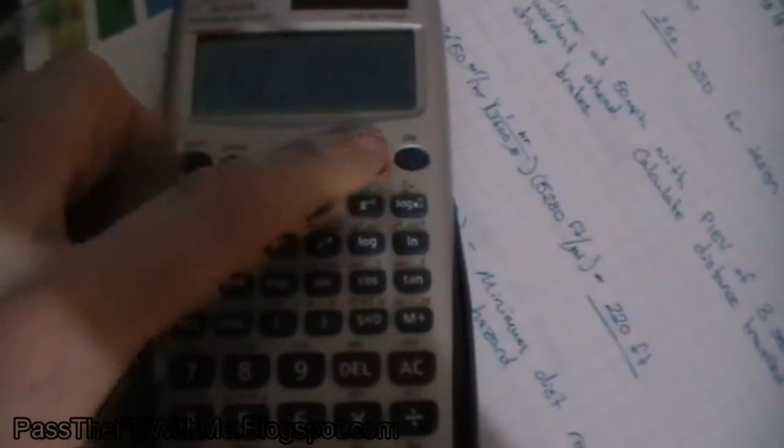The first thing you want to do is hit mode, and then as you can see option number 6 would be matrix. So let's press 6. Now it's going to ask you to pick a matrix. Your calculator can store three matrices in its memory, so let's just start with A.